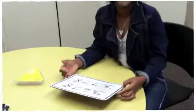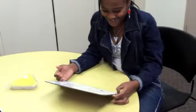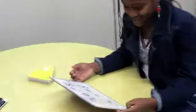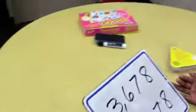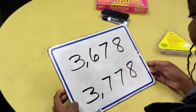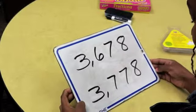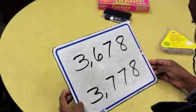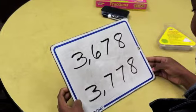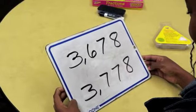First number. Two thousand six hundred seventy-eight. Okay, and what's the second number? The second one is two thousand seven hundred seventy-eight. Which number is bigger? The second one.